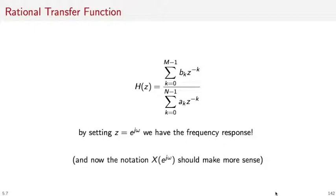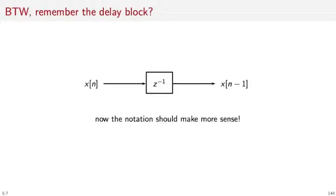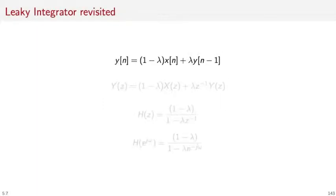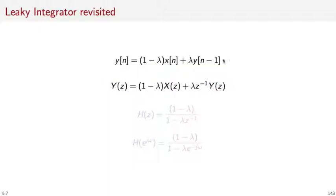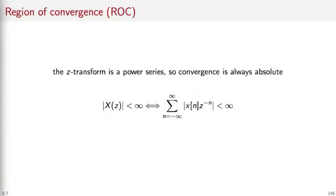It should now be clear why we use the notation X(e^{jω}), and the notation for the delay operator from Module 2 also makes more sense — the transfer function of a delay-by-one system is z to the minus one. To appreciate the power of the Z-Transform formalism, let's revisit the leaky integrator and derive its frequency response in a few easy steps. From the CCDE of the leaky integrator, we take the Z-Transform of both sides, rearrange terms, and find that the transfer function H(z) is simply (1 − λ) divided by (1 − λ z^{−1}). One remaining question is: when does the Z-Transform exist?